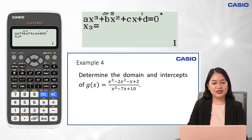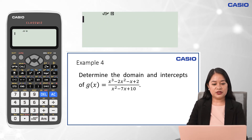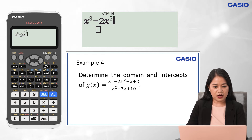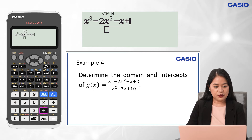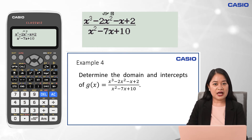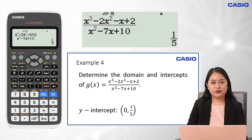Lastly, to identify the y-intercept, substitute 0 to x of this given rational function using the Calculate menu. Press Menu 1. Input the rational expression: fraction key, then x cubed minus 2x squared minus x plus 2 in the numerator, right arrow key, then x squared minus 7x plus 10 in the denominator. Press Calc and input 0 for the value of x, then press the equal sign twice. Therefore, the y-intercept is 1/5, or the graph passes through the y-axis at point (0, 1/5).